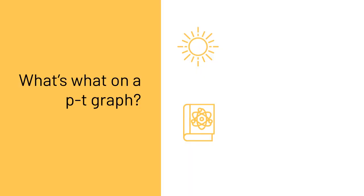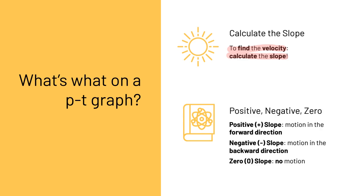Let's continue looking at what's what on a PT graph. We calculate the slope to find the velocity — if you want the numerical value of the velocity, calculate the slope. You can also look at the slope visually to determine whether the velocity is positive, negative, or zero. A positive slope means the object is moving in the forward direction. A negative slope means the object is moving in the backward or negative direction. A zero slope — a flat line — means the object is standing still with no motion.